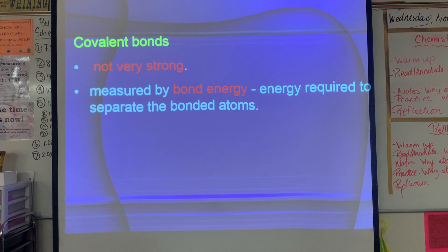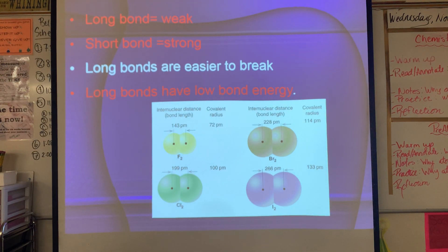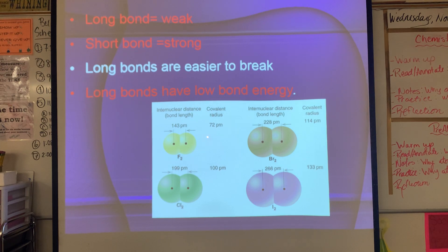Covalent bonds are not as strong. Covalent bonds exist as individual molecules — not a giant crystal — so we're only talking about attraction between atoms in one molecule. We measure covalent bond strength by bond energy: the energy required to separate the bonded atoms. We break bonds all the time in chemical reactions by supplying enough energy. Long bonds are weak with low bond energy and easy to break; short bonds are strong and harder to break.